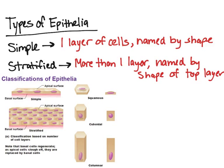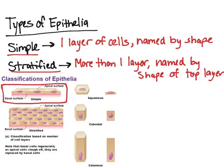In this video, I'm going to talk about the different types of epithelial cells, or the different types of epithelia. There are two types: simple and stratified. Simple is just one layer of cells resting on top of the basal surface, as shown in the diagram.